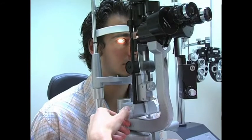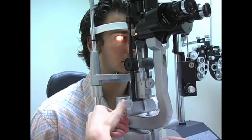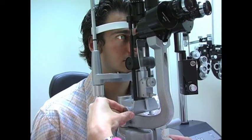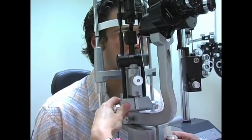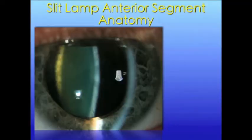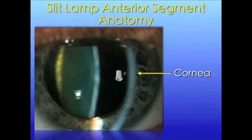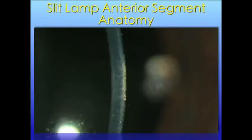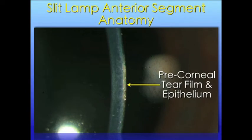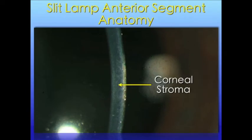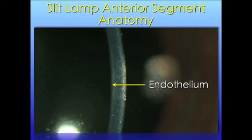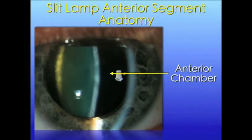Once the surface of the eye has been examined, you are ready to perform the slit beam evaluation. Using the lower knob, decrease the width of the light source to create a thin beam and move the light source to an approximately 45 degree angle. By generating a very thin beam of light directed at an angle, you are able to view an optical cross-section of the clear structures of the eye. The first structure the light passes through is the cornea, which under normal conditions is clear. The first curve is the precorneal tear film and corneal epithelium. The broad part of the beam is a cross-section of the corneal stroma, and the posterior curve is the corneal endothelium.